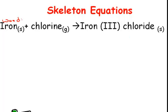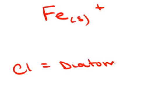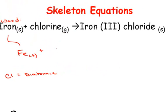To do this, we write the formula of iron, which is Fe, plus chlorine, and remember, chlorine is one of our diatomic molecules. So, it's Cl2 yields iron 3 chloride.